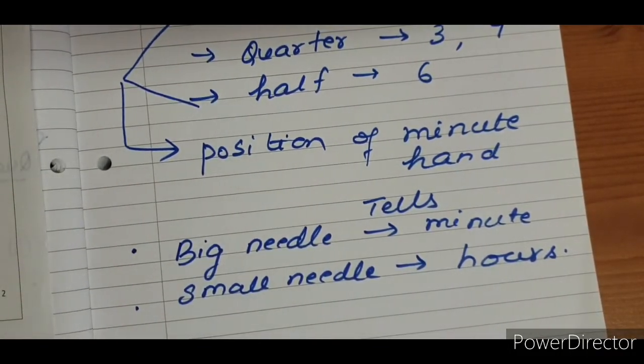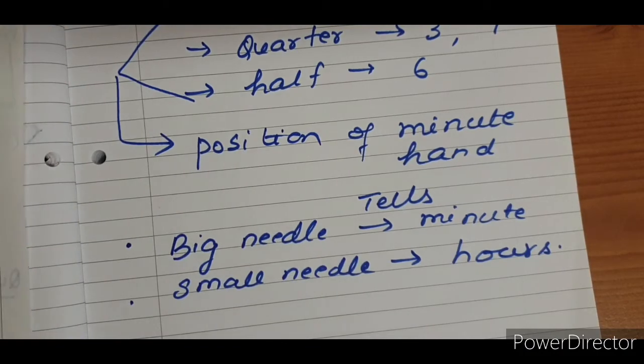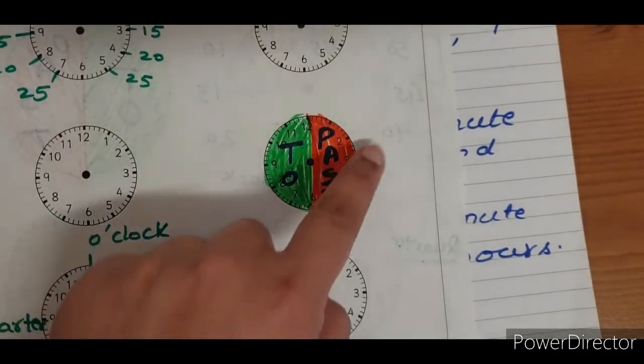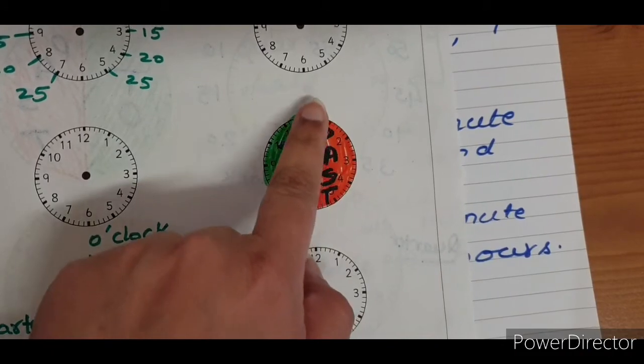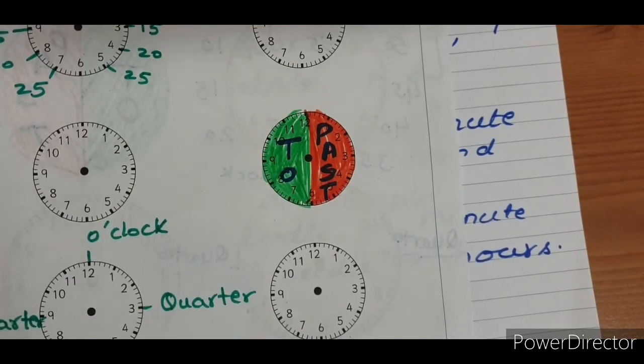Also, there is another element in the analog time. To and past. If you have seen anywhere written time in analog format, the time is always written with two special words. To and past. So, again, I will help you to describe these two words with the help of a clock face. Look at this picture. Again, I have vertically divided my clock into two parts. And on this side, I have written past. And on this side, I have written to. Now, let's understand what's the meaning of to and past.